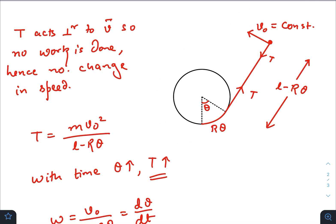Only tension is acting and this tension is perpendicular to the motion of the particle. So of course, this tension won't hamper the speed because it will not do any work, so the speed will remain constant.